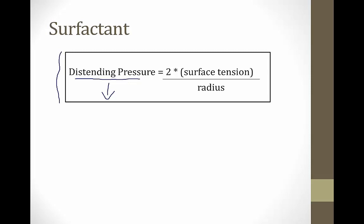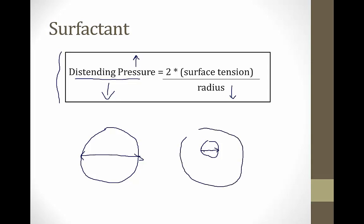Consider two spheres — one large, one small. The large sphere has a bigger radius, which means its distending pressure is lower. The small sphere has a low radius value, so its distending pressure is high — meaning it takes more pressure to keep the small sphere open, and it's more likely to collapse.